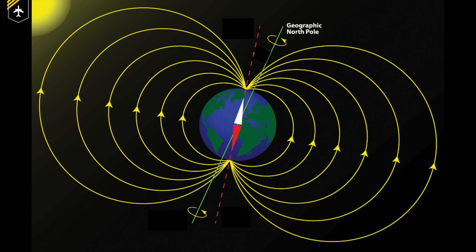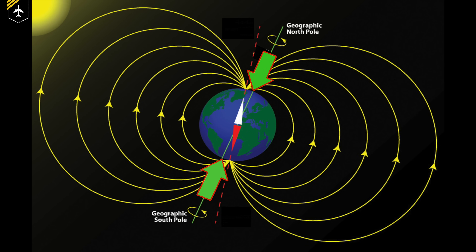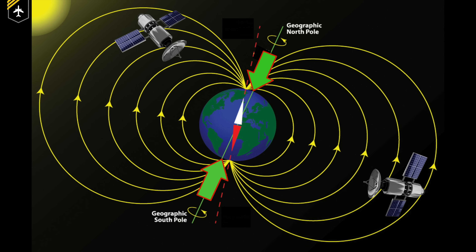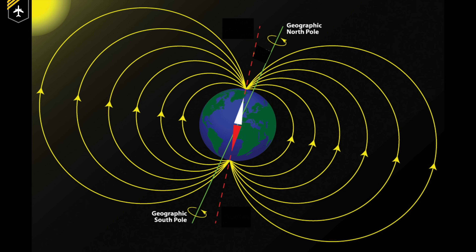We're going to have to cover some basic navigation first. As we look at our planet Earth, we have the geometric north and south pole in each hemisphere, marking the top and the bottom of the planet. But there is no instrument besides GPS which could guide us towards these poles. The planet has its own magnetic field surrounding the Earth.